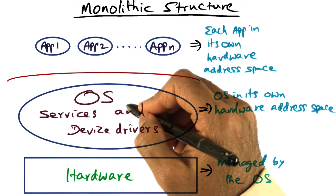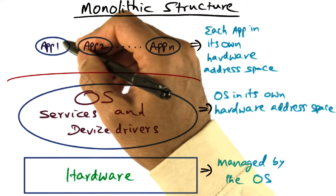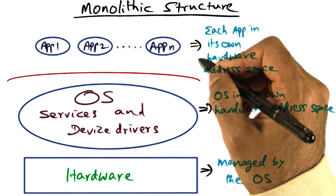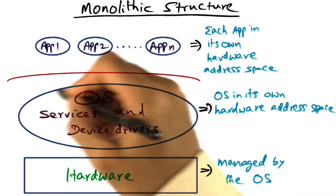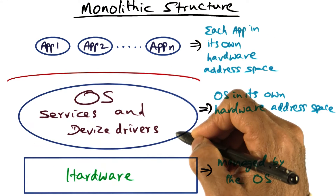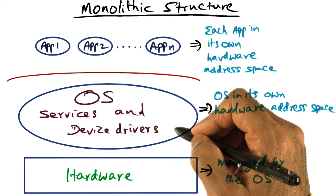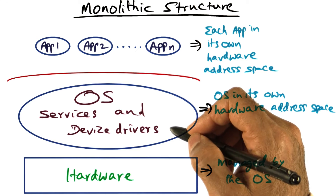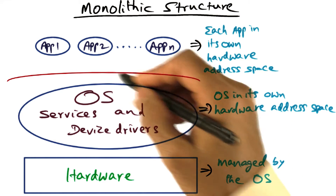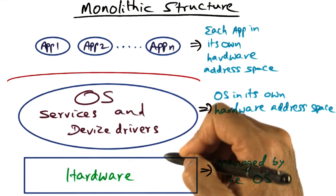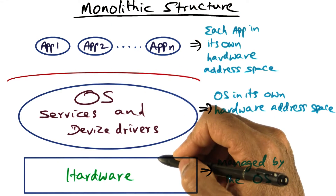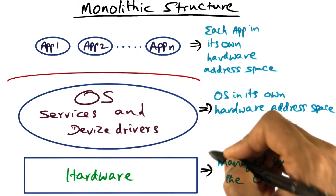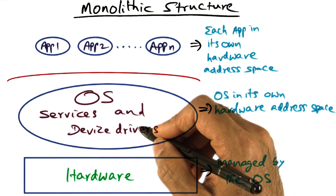All the services that applications may expect from the operating system are contained in this blob, and that might include file system, network access, scheduling these applications on the available CPU, virtual memory management, and access to other peripheral devices.